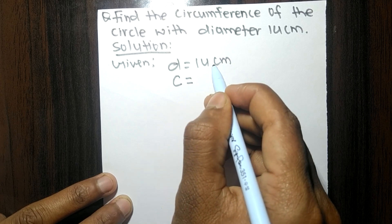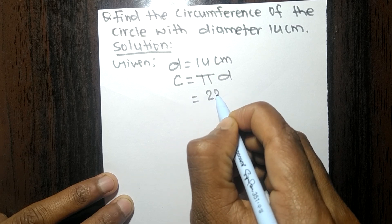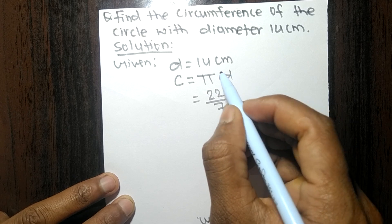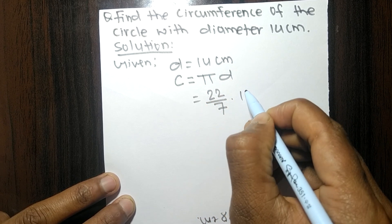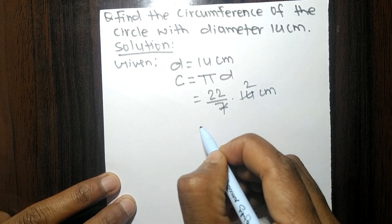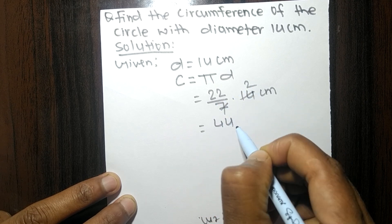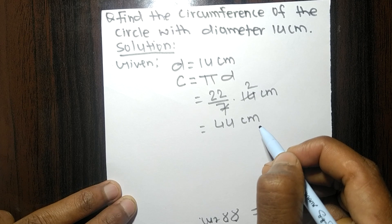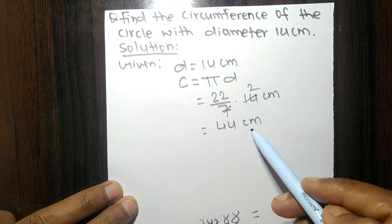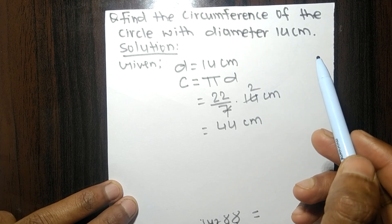The circumference of a circle in terms of diameter is pi times d, where pi equals 22/7 and d equals 14 centimeters. So 14 divided by 7 gives 2, and 22 times 2 equals 44 centimeters. Therefore, the circumference of the circle is 44 centimeters.